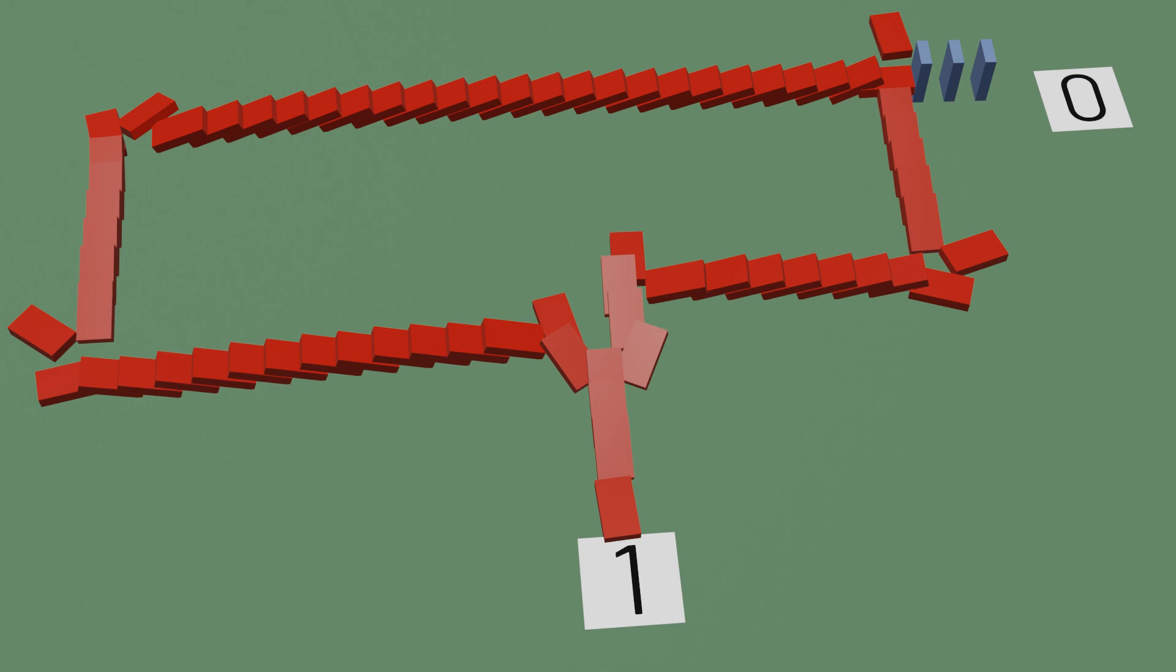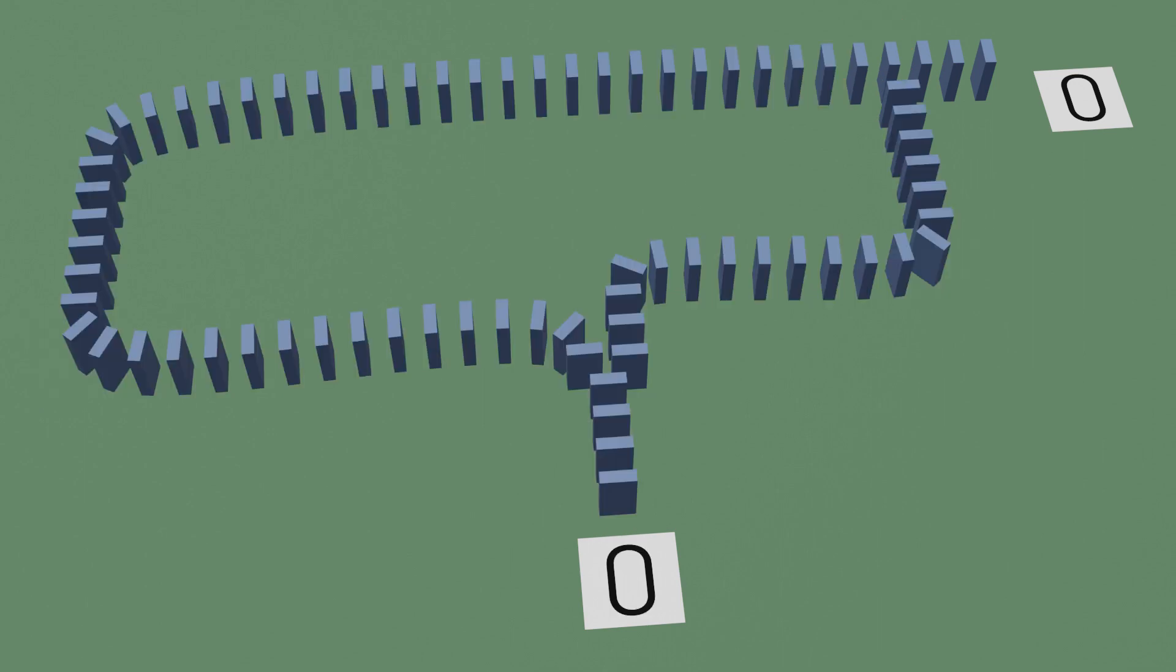And now, in order to create an AND gate, we just need to add a second input that interrupts the interrupting path. Watch what happens. If just the second input is pushed, nothing happens to the output.